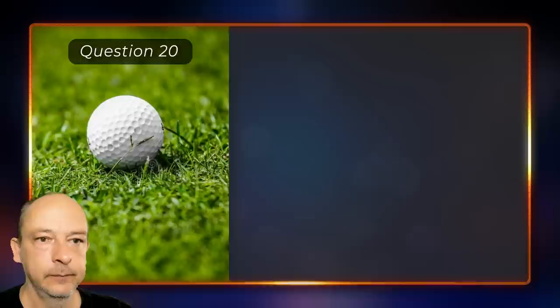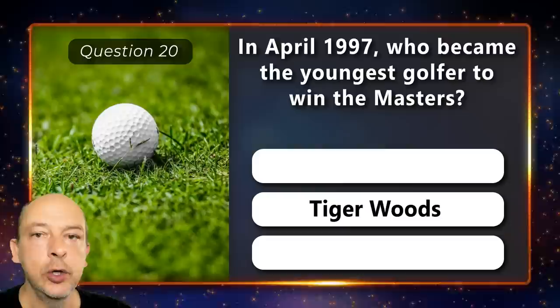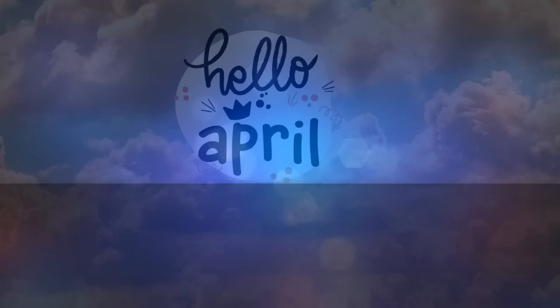In April 1997, who became the youngest golfer to win the Masters — Nick Faldo, Tiger Woods, or Vijay Singh? Tiger Woods.